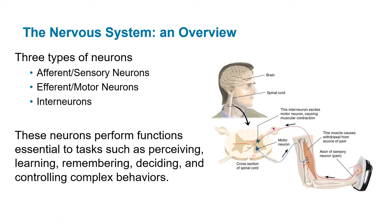Each of these neurons performs essential tasks such as perceiving, learning, remembering, deciding, and controlling complex behaviors. All of these processes are also happening in the brain, basically determining thoughts and behaviors.